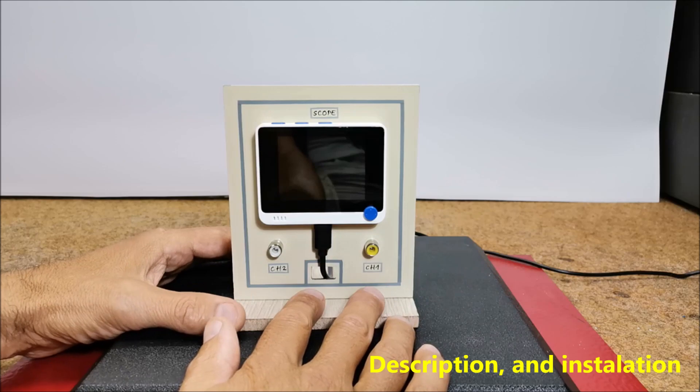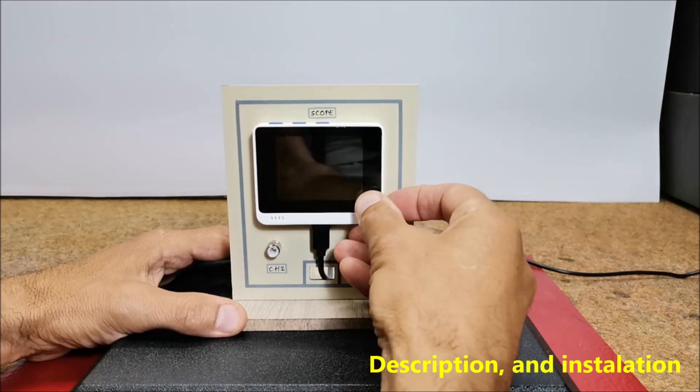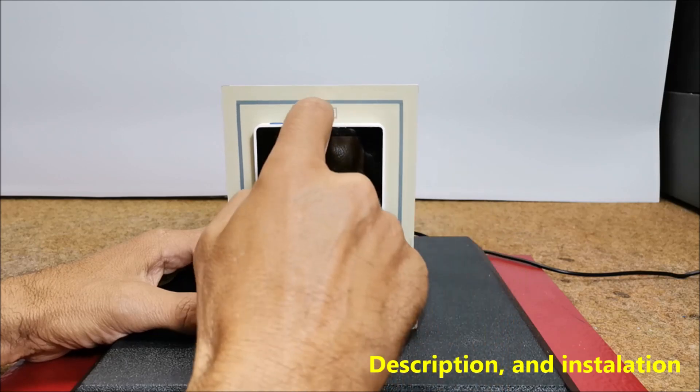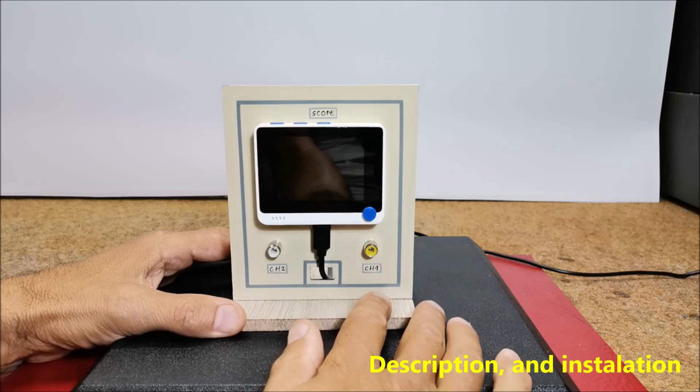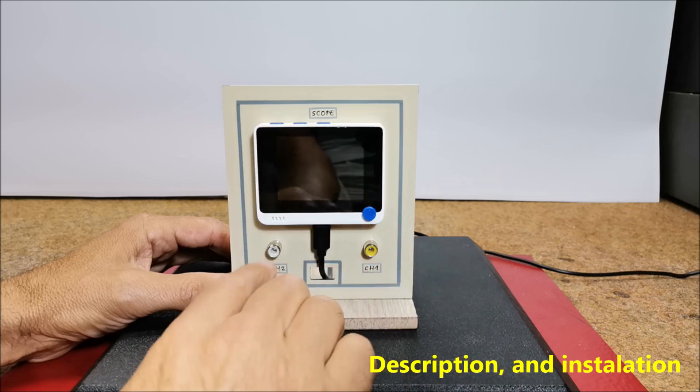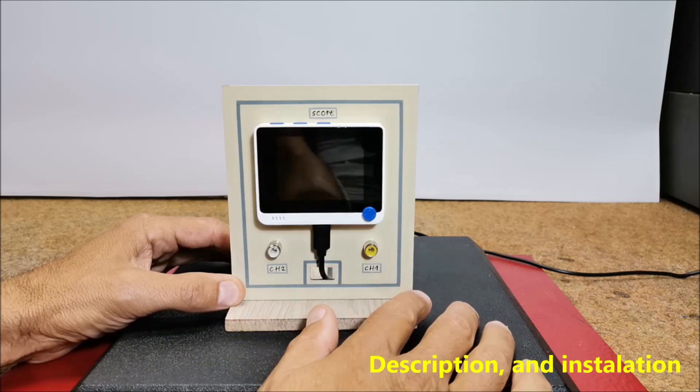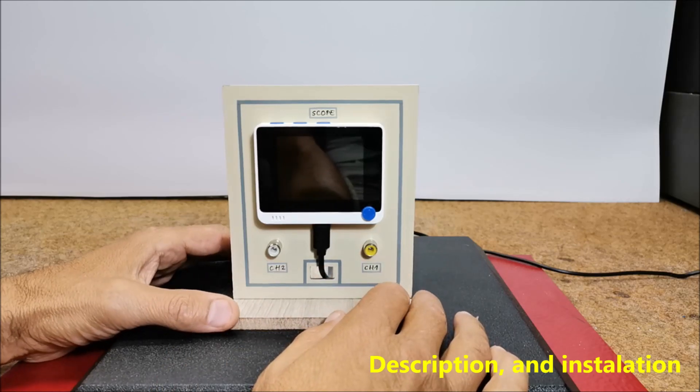This is the ported version for WIO Terminal and now the device is controlled through the built-in buttons. Although the device is extremely simple to make and in addition to the WIO Terminal, we only need two more connectors for the input signal. Specifically, I used RCA type connectors.